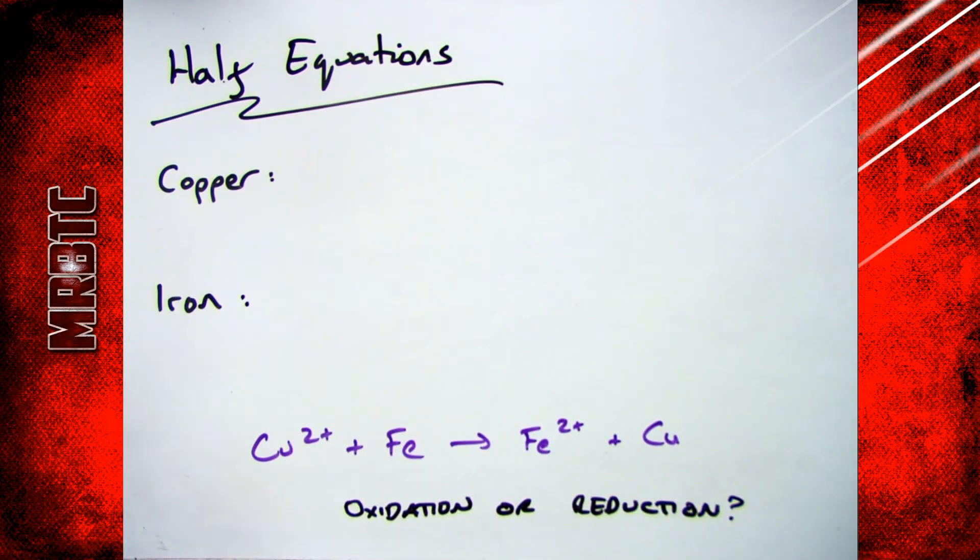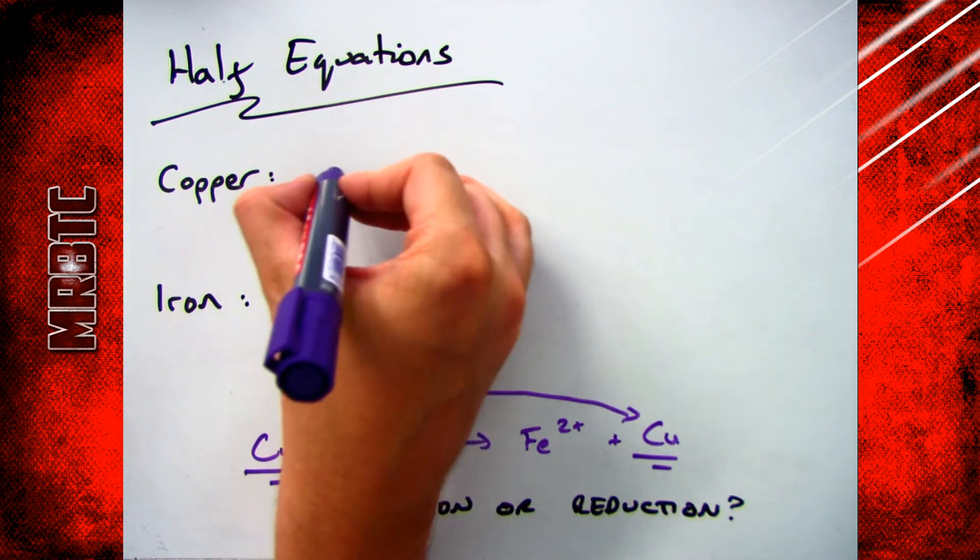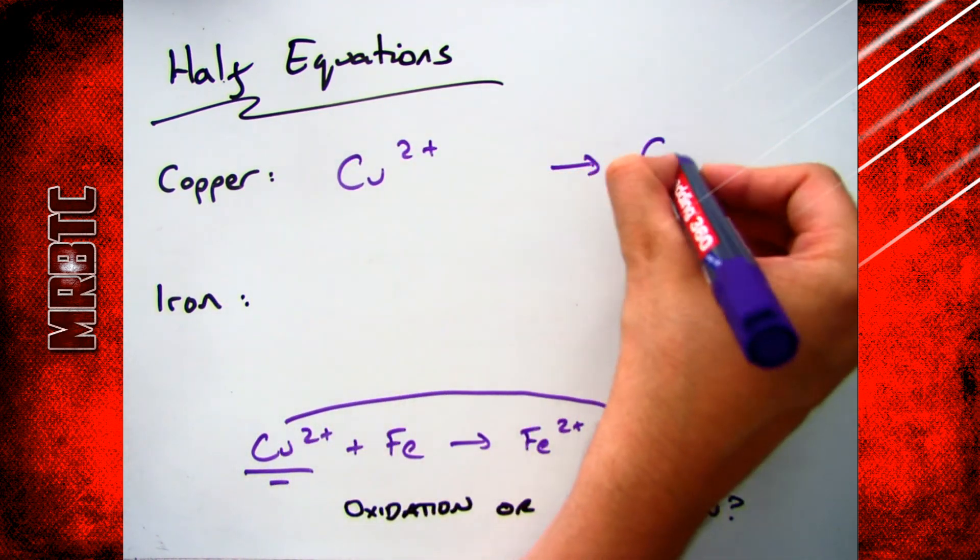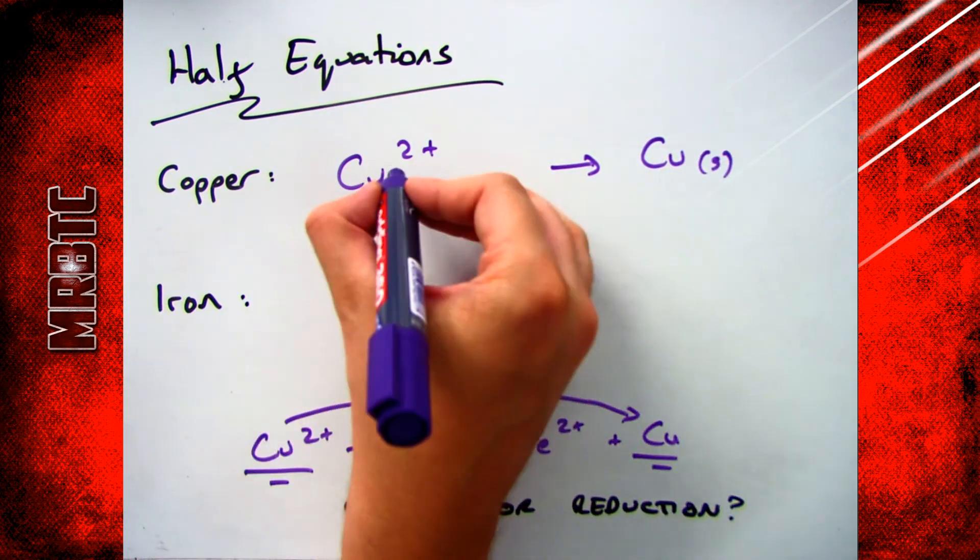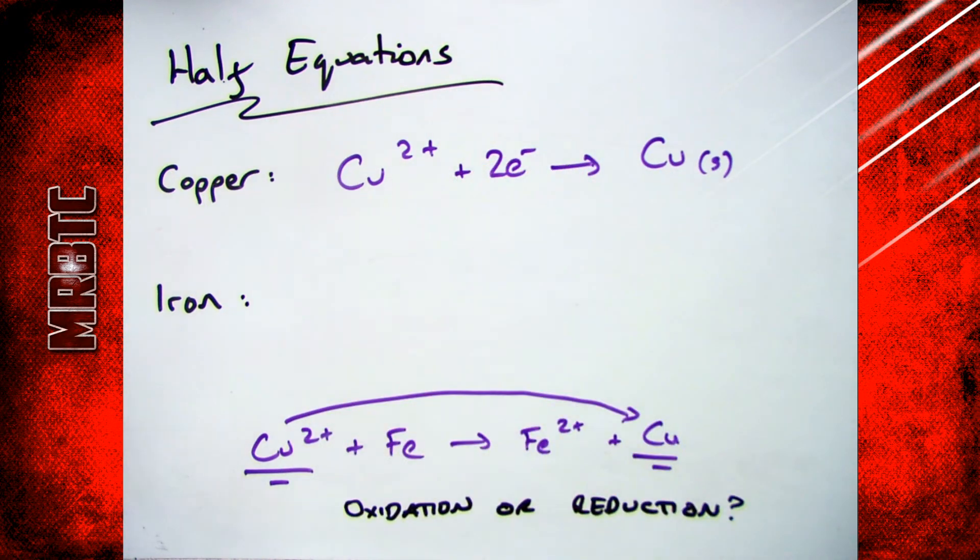So if I start off with copper, I'm starting off with Cu2+ and I'm ending up with Cu. So I can write that into my half equation up here: Cu2+ → Cu. The next thing you've got to do is figure out how I got to that. So I've started off with an ion, I've gone back towards my metal. I've got to add two electrons in. So it's Cu2+ + 2e- → Cu.